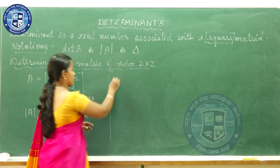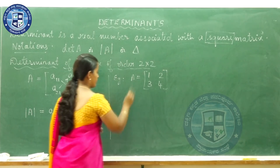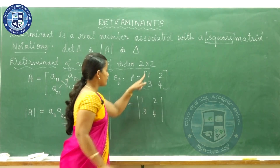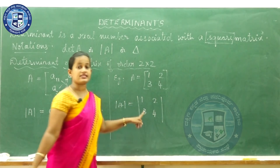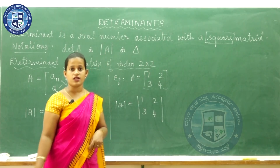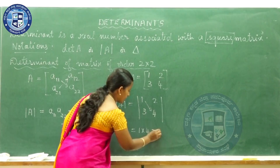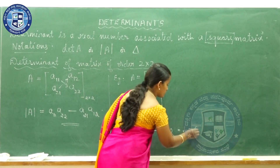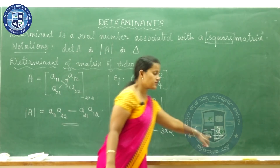Let me consider an example. A is [1, 2; 3, 4]. When we write the determinant, we need to write two vertical lines. Note the change: if you have a square bracket, then it is a matrix; if you have only two straight lines, then it is a determinant. So the value is 1 into 4 minus 3 into 2, that is 4 minus 6, which equals minus 2. So the determinant value of this matrix is minus 2.